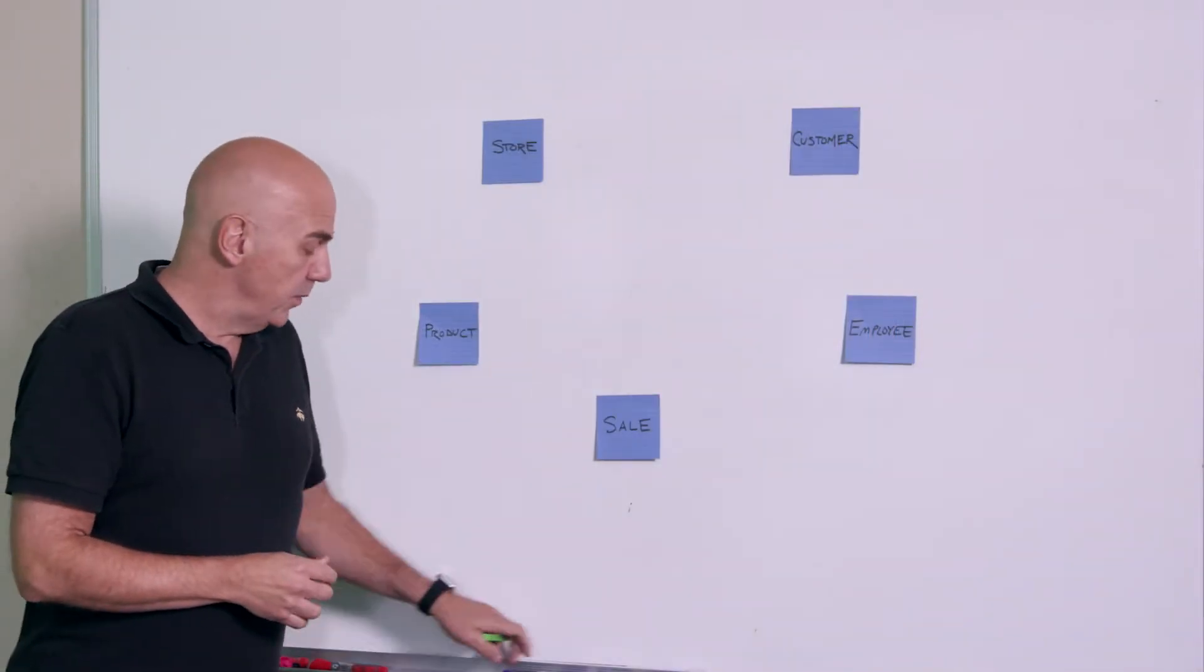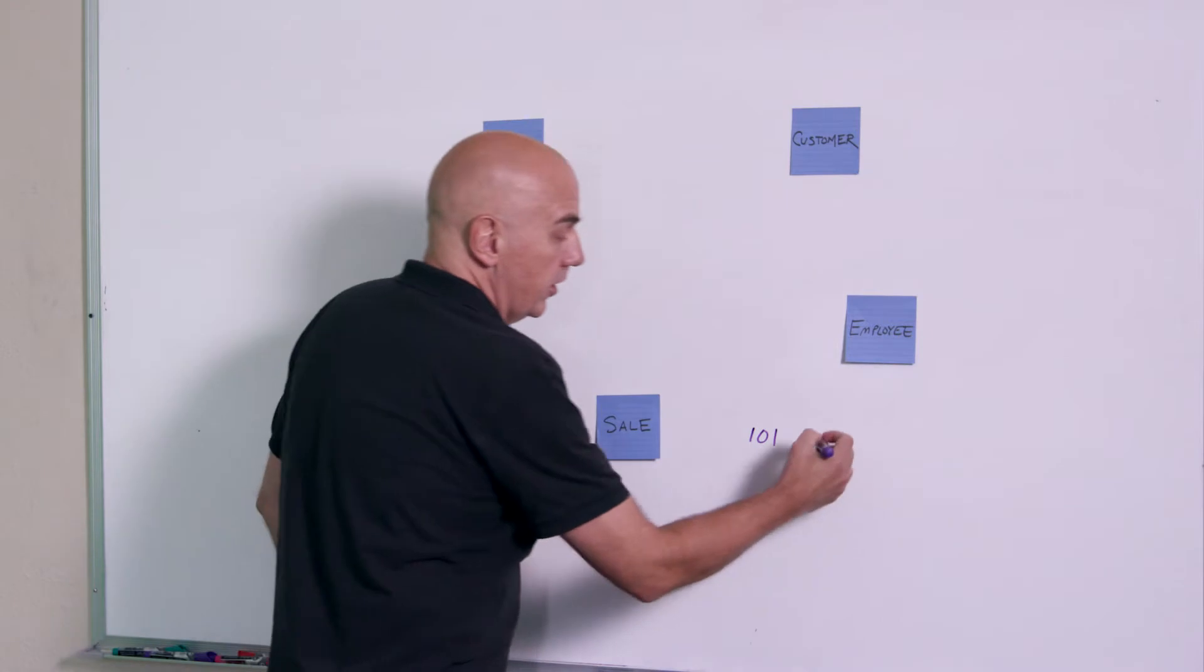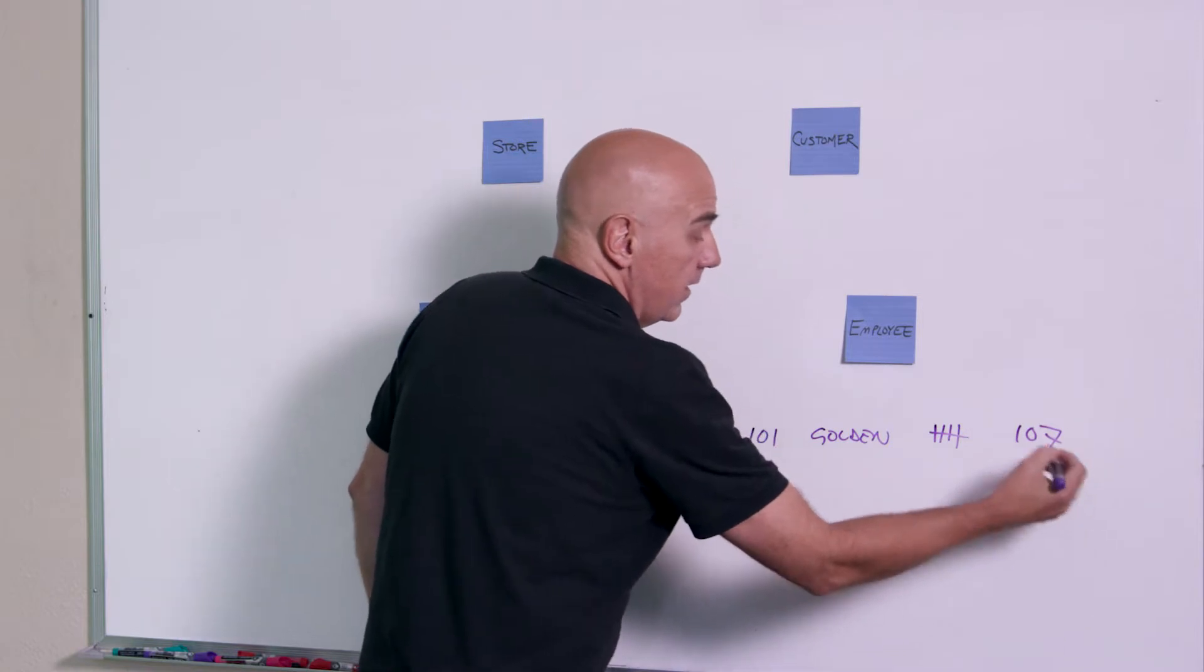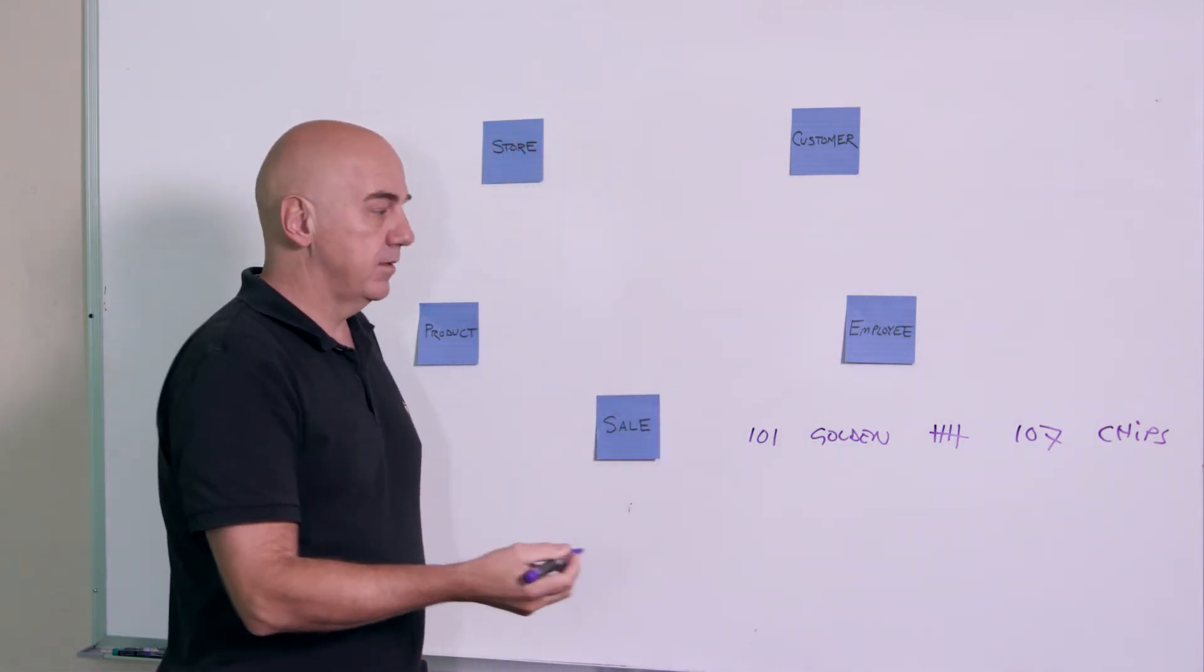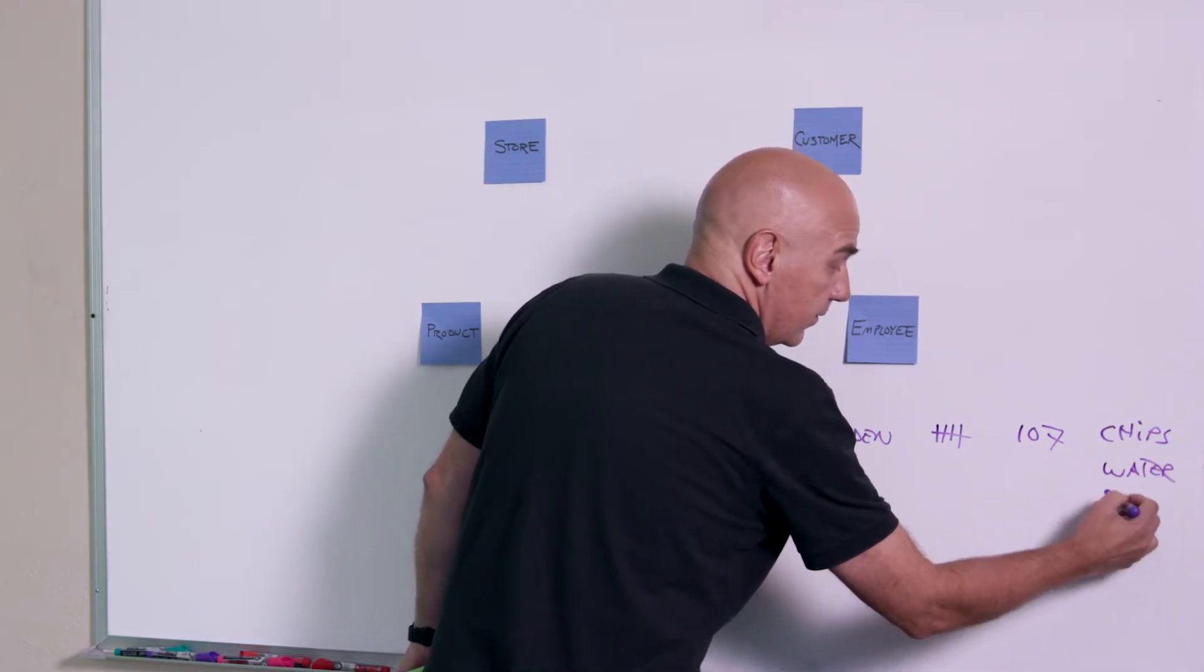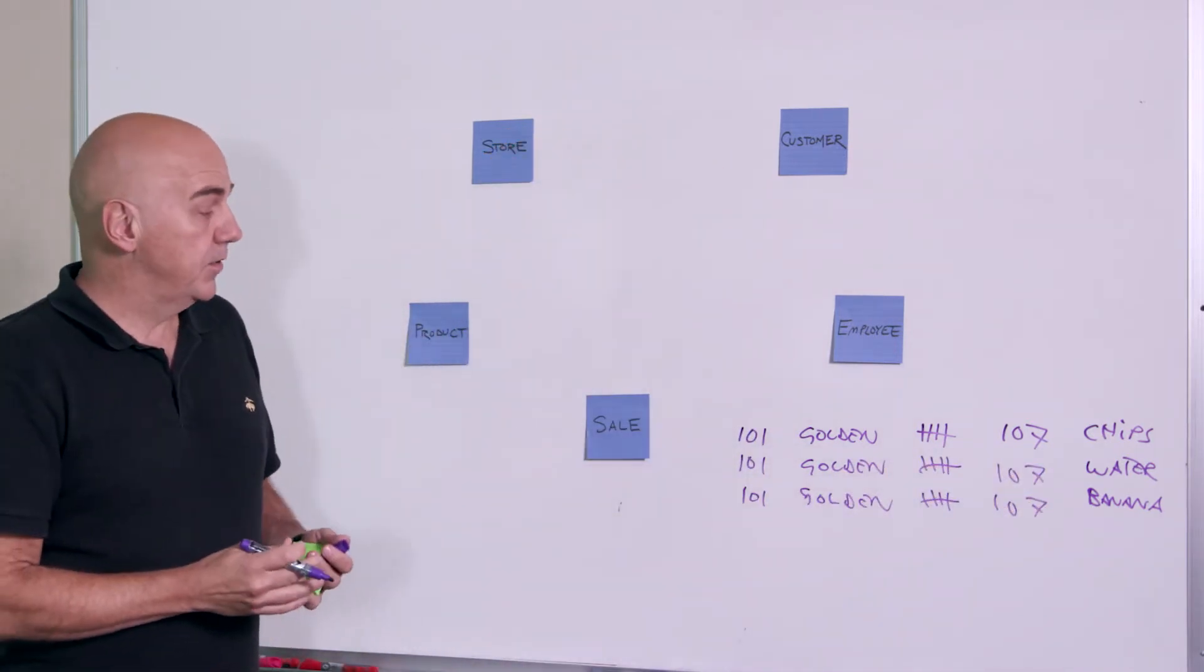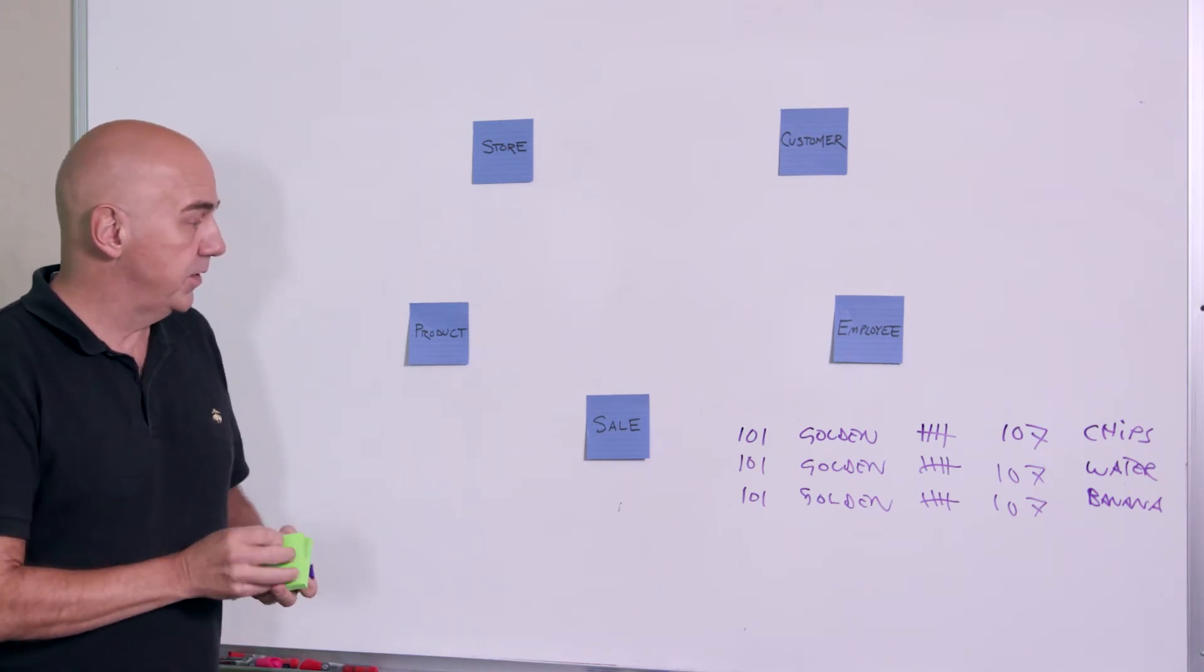So the problem we had was that when we start to look at records here, if I have sale 101, store the Golden Store, and the customer let's say it's Hans HH, and employee 107, and I buy a bag of chips. Every time I buy another product, maybe it's a water or a banana, I'm going to each time repeat this same information over and over again. This redundancy is really going to continue on. You can imagine 50 or 100 different records. So to avoid that, we want to separate these out.